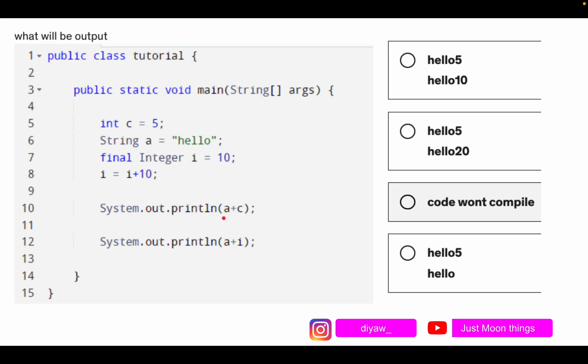Then we are trying to print the addition of a and c, and then we are trying to print addition of a plus i. If you observe, we have a final integer, not int. This is something that is different in this question and you have to think about it and be very well versed with the rules of final in Java.